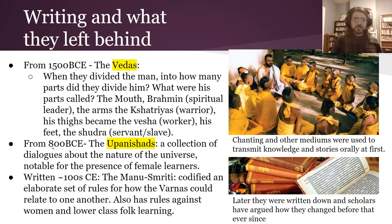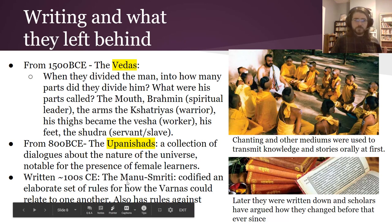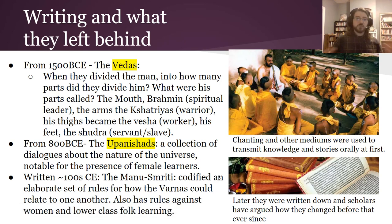From about 800 BCE, the Upanishads — a collection of dialogues about the nature of the universe — are far more closely related to later religious ideas like Buddhism. Interestingly, these dialogues include female learners as participants. Later we have this document which codified an elaborate set of rules for how the Varnas could relate to one another.